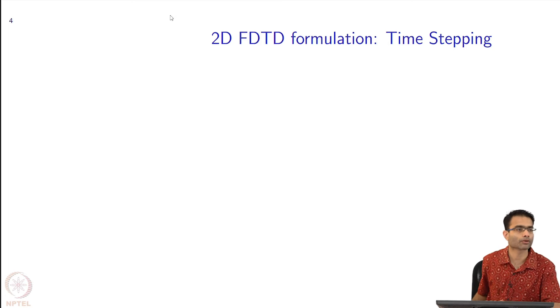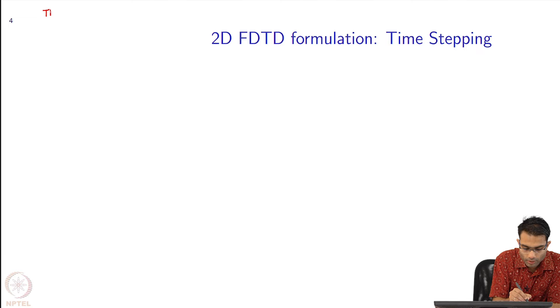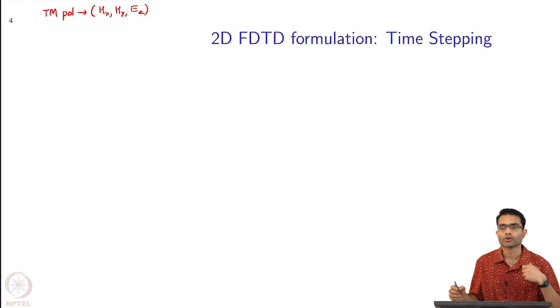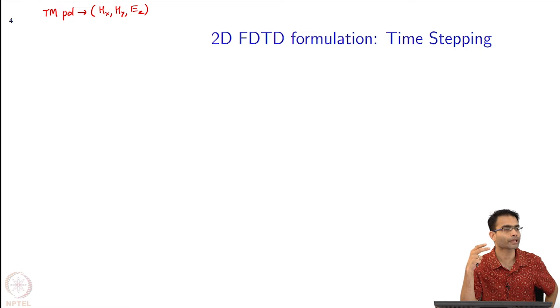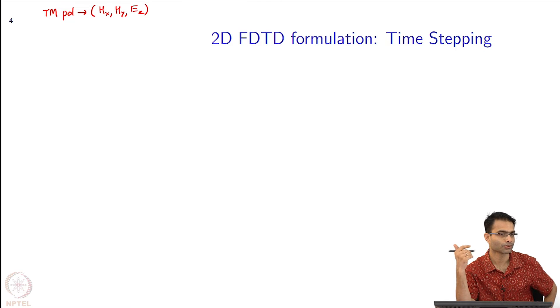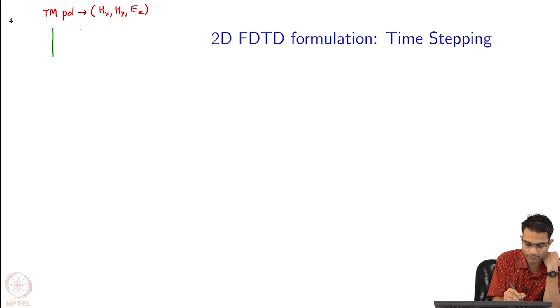Before we move to time stepping, for sake of completeness I will show you the stencil for TM polarization. So far we spoke about TE polarization. For TM polarization, what are the variables? Hx, Hy, Ez - these are the three variables. We have seen that the logic has been to stagger all these three variables by half a grid. They should not all be at the same point in space.